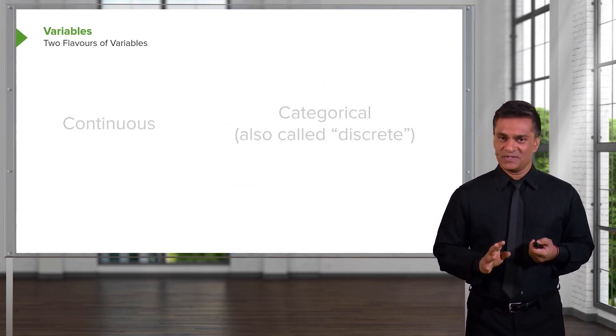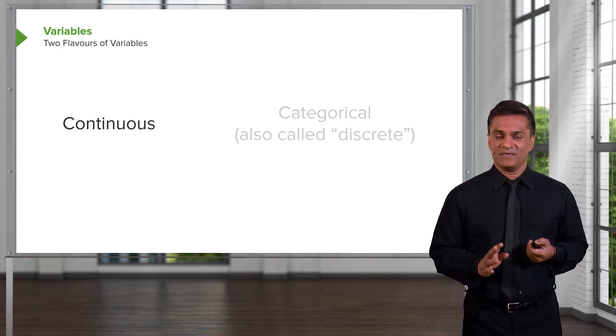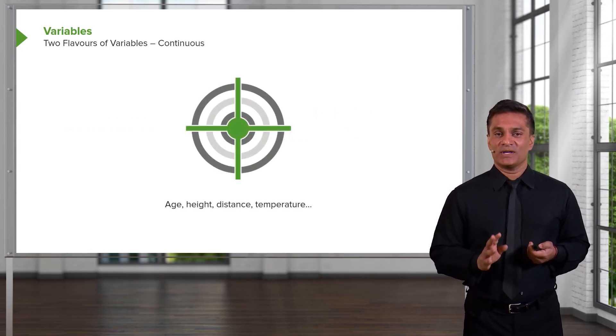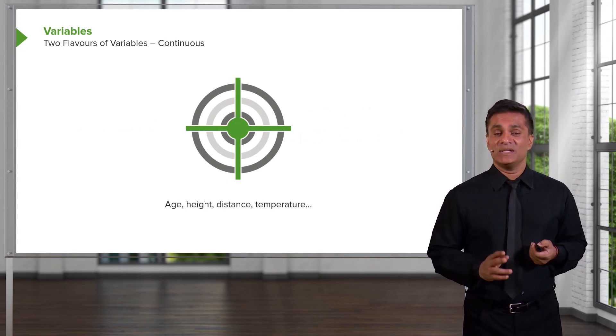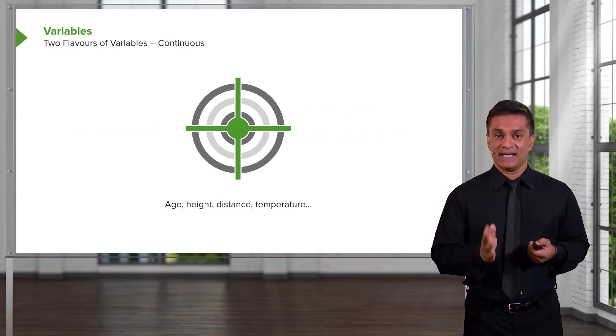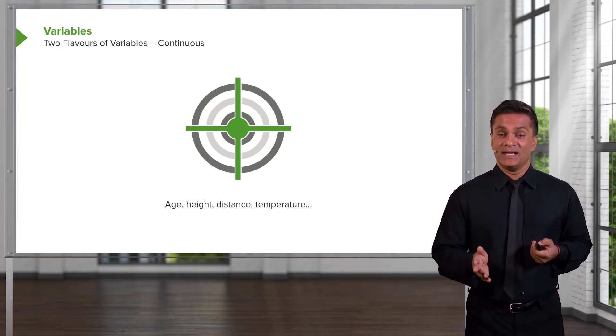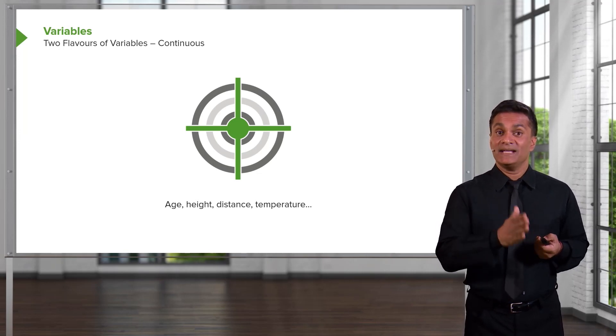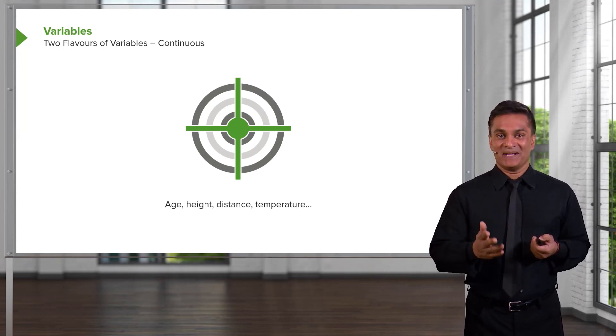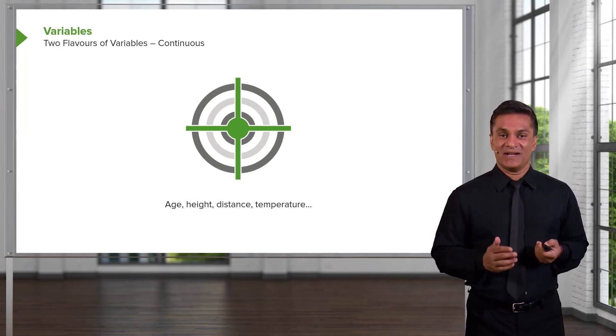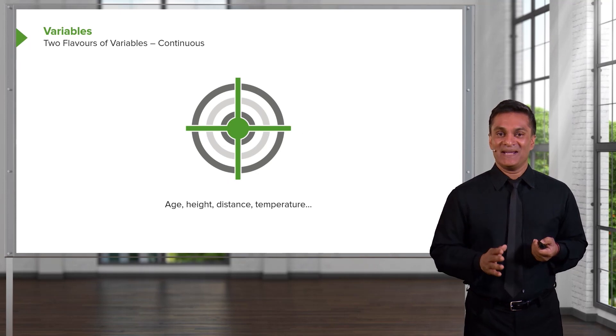There are two flavors of variables. And we've covered this in a previous lecture. But the two flavors are continuous and categorical. So a continuous variable is something like age or height or distance or temperature. It's a measurement that has meaning in between its values. I can be 25 years old. I can be 25.5 years old. I can be 25.51 years old. There's still meaning there.